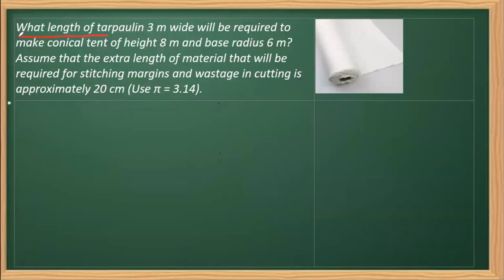The question asks what length of tarpaulin, which is 3 meters wide, will be required to make a conical tent of height 8 meters and base radius 6 meters. We need to assume that the extra length for stitching margins and wastage in cutting is approximately 20 centimeters or 0.2 meters.